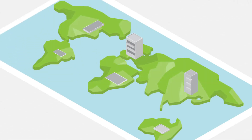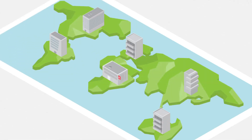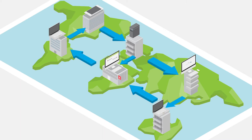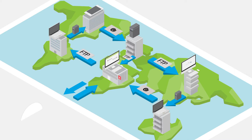Companies all over the world are using different tools and systems to organize their business. An essential part of the daily work is exchanging messages and sharing information. Technologies and channels like mail, FTP, middleware, and cloud-based systems are used to reach that goal today.